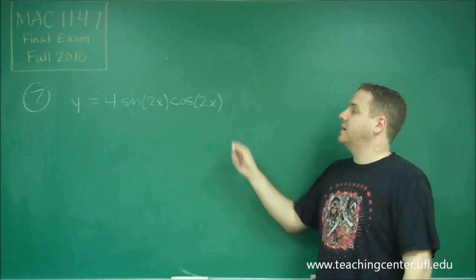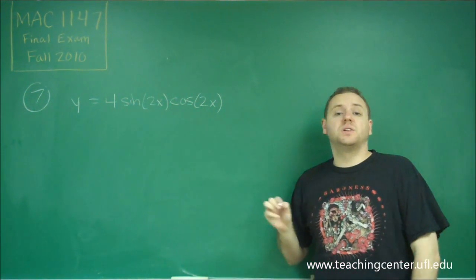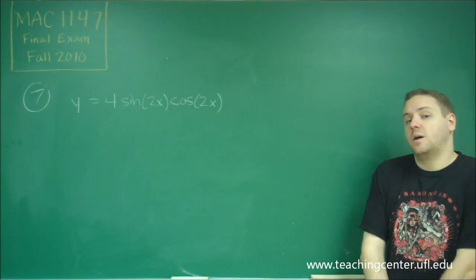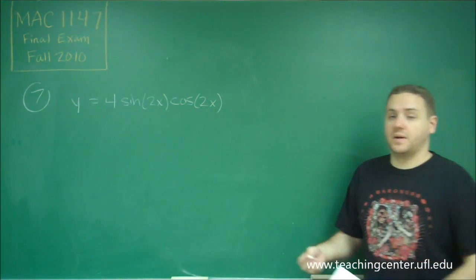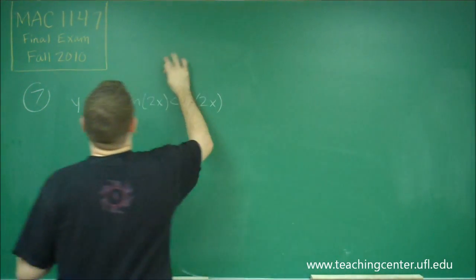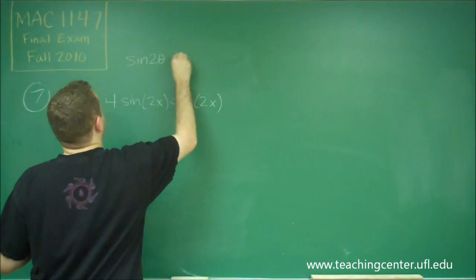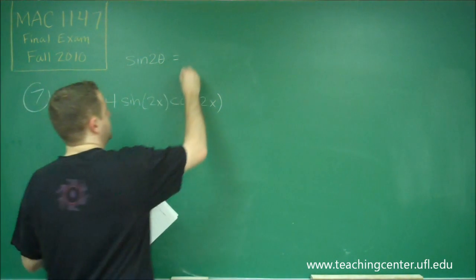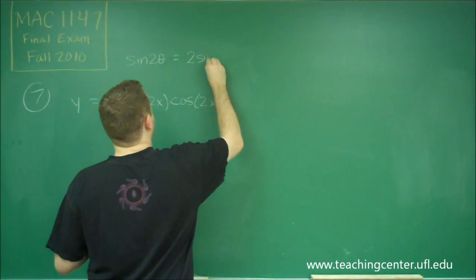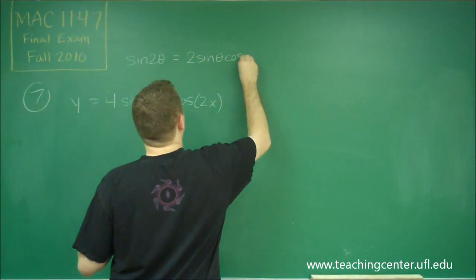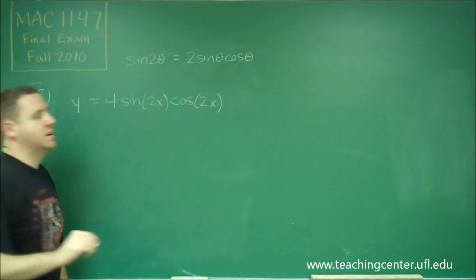So you might recognize by what this looks like, this is really close to one of our trig identities, a double angle formula that you need to have memorized. So one of your double angle formulas says that when you have sine of 2 theta, that's equal to 2 sine theta cosine theta.